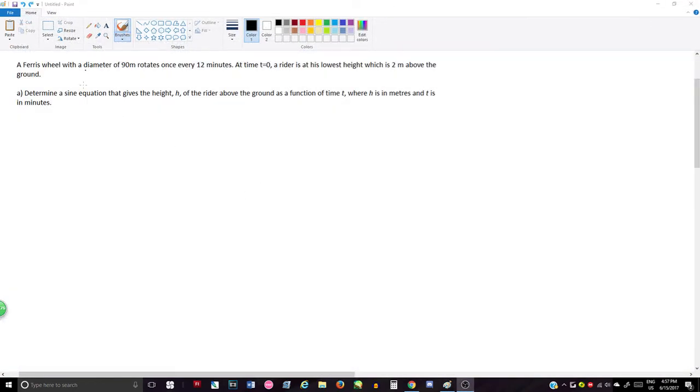So here we have a typical question seen in some workbooks. A Ferris wheel with a diameter of 90 meters rotates once every 12 minutes. At time t equals 0 minutes, a rider is at his lowest height, which is 2 meters above the ground. So we can draw a picture of this with the information given.